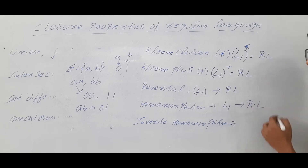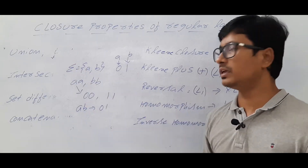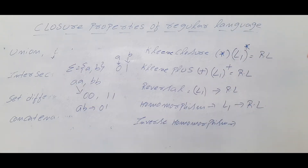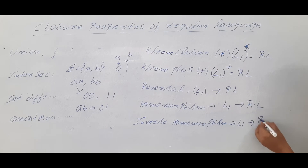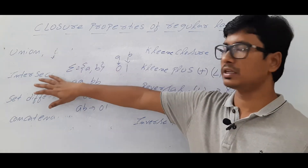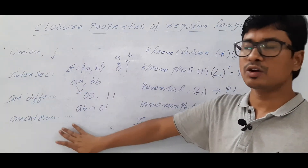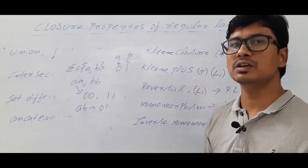The homomorphism of a regular language is also a regular language. Inverse homomorphism means when you get a zero you map it back to 'a' — that is inverse homomorphism. If a language L1 is a regular language, inverse homomorphism of it is also a regular language. So I hope you have understood union, intersection, set difference, concatenation, homomorphism, and inverse homomorphism.